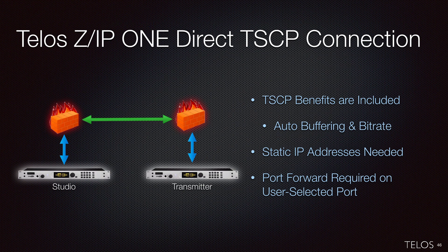The next connection type is a direct TSCP call. With direct TSCP, you get all the benefits of agile connection technology — automatic buffering and automatic bit rate between two ZIP1s — but without using the zip server. To use direct TSCP, you must have a static IP address on your ZIP1s and they must be able to see each other, with a port open on the firewall. This is great for IP radio links, private T1s, or private WANs, or when you have a static IP from your ISP.